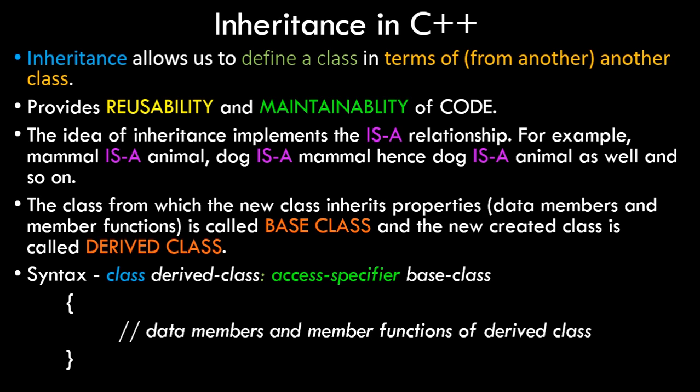Maintainability means that when the properties of the base class change, automatically the new derived class gets those updated properties, so you don't have to make changes twice and the code remains consistent. These benefits may not seem important when writing 50-line programs, but when you're creating classes spanning 100 or 200 lines, reusability and maintainability become very important — that's when inheritance shows its advantages and saves a lot of time.